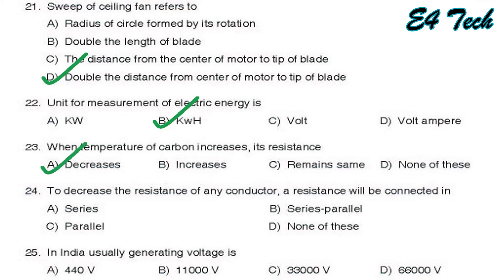If the resistance is a semi-conductivity, the resistance will be connected in parallel. That is option C, parallel. In India, generating voltage of India is 11 KV. That is option B, 11,000 volts.